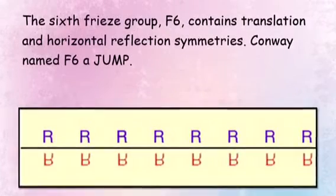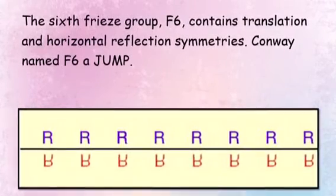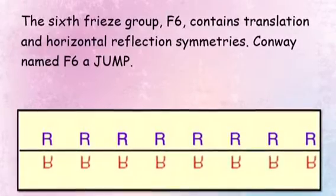The sixth freeze group, F6, contains translation and horizontal reflection symmetries. Conway named F6 a jump.